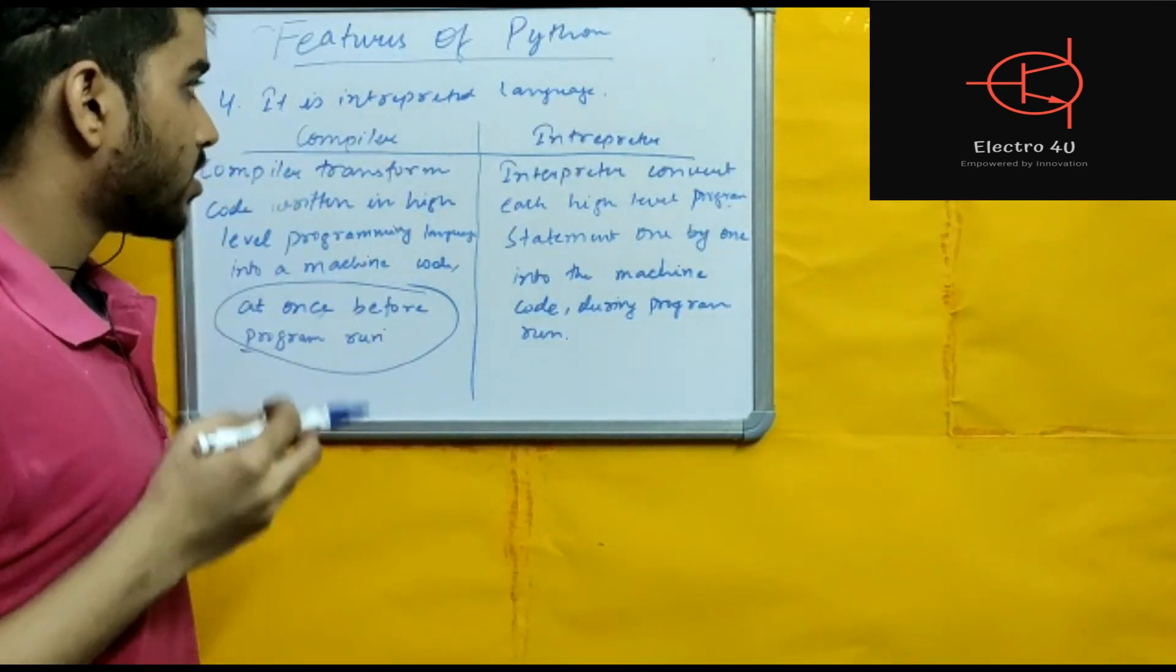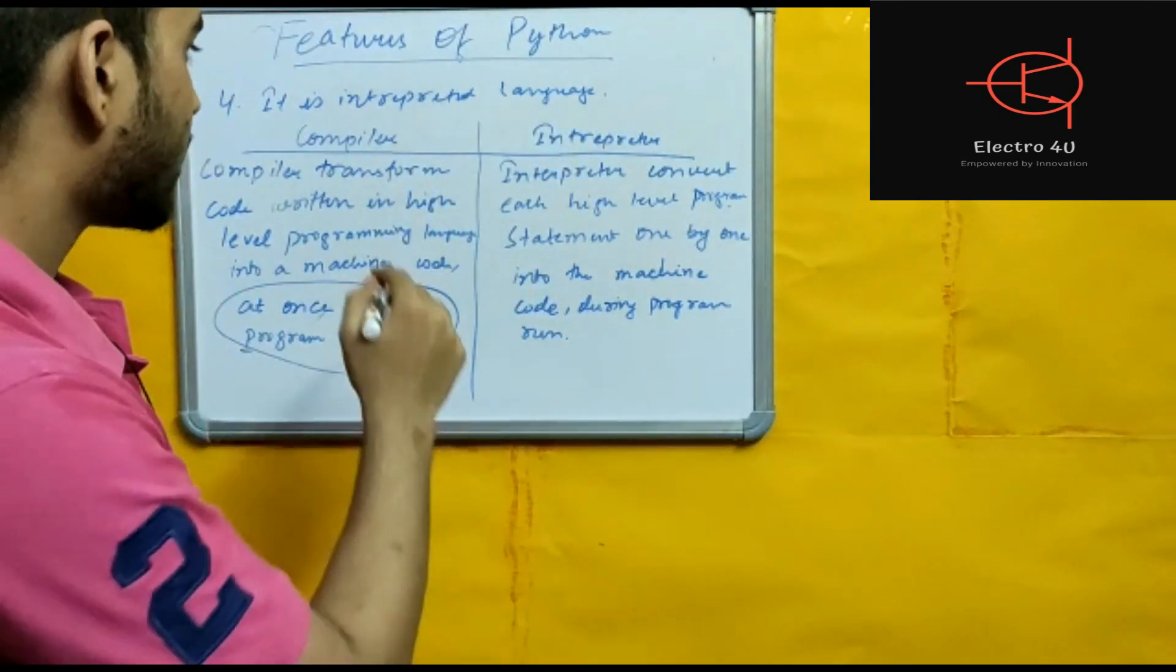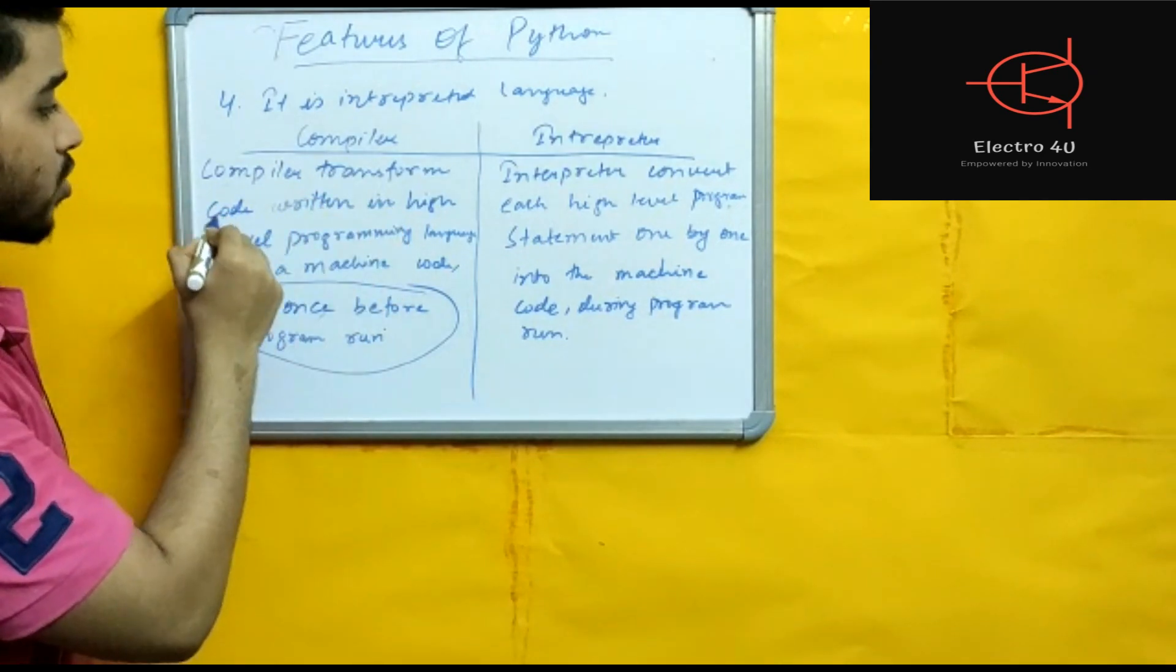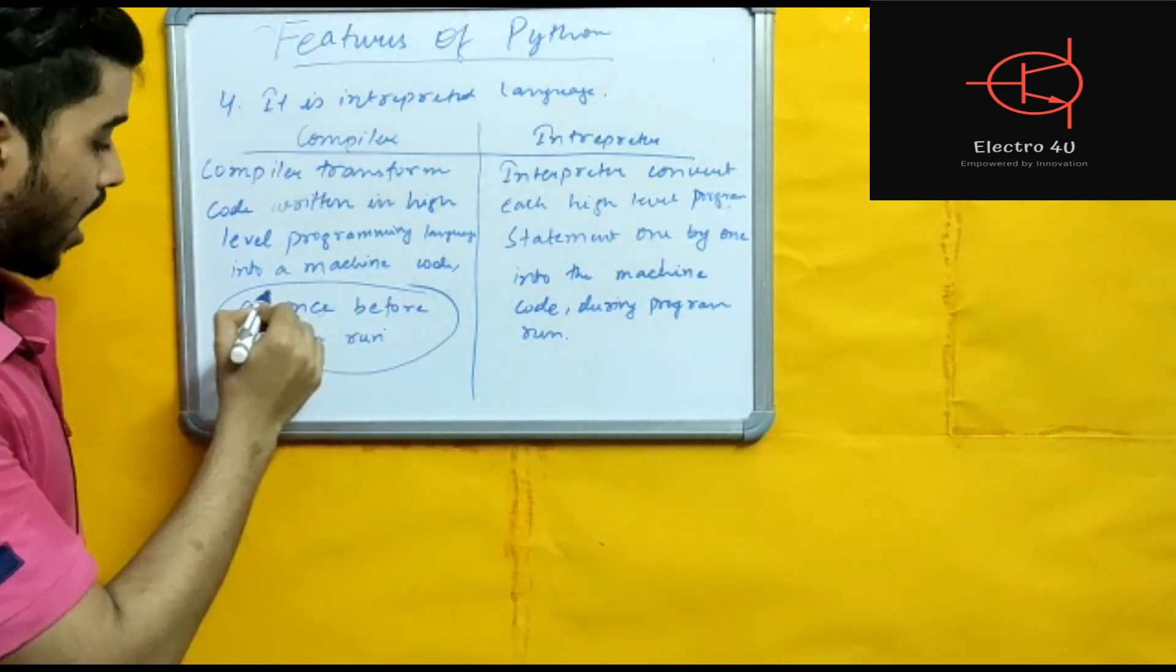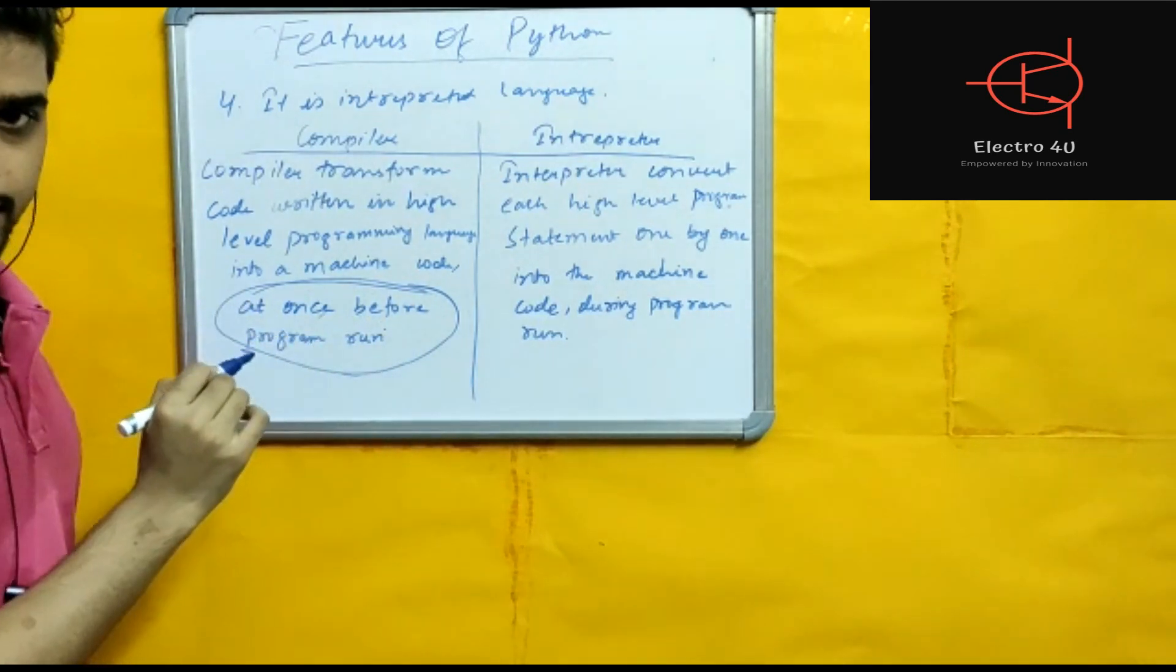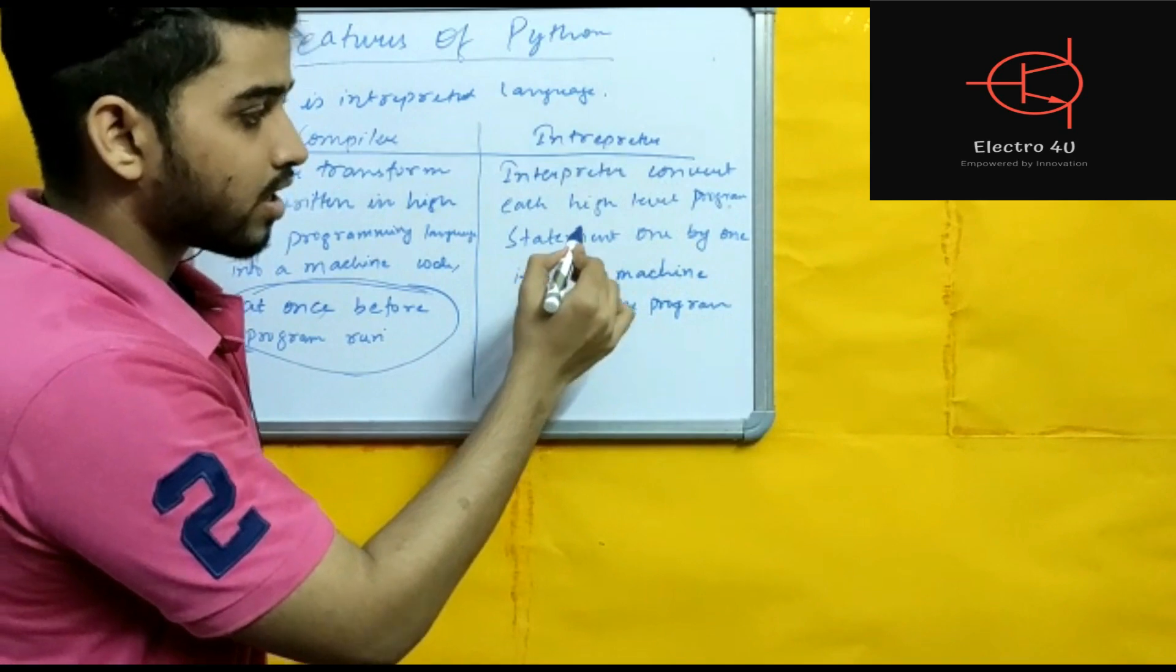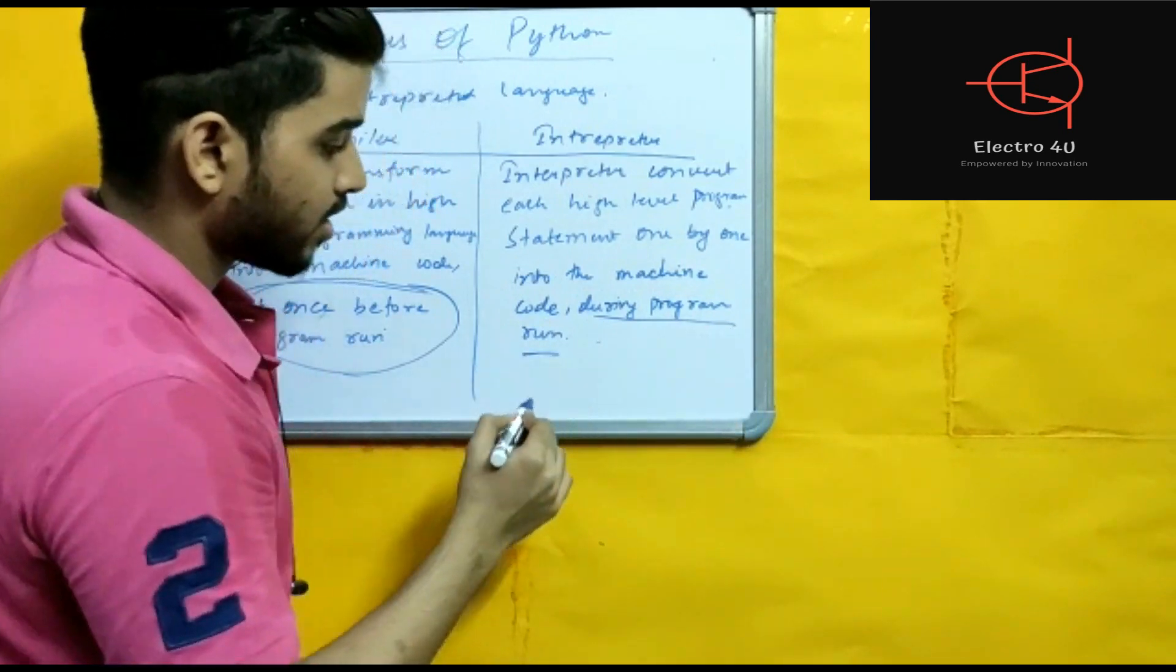Fourth feature: Python is interpreted language. Interpreter and compiler. Compiler transforms code written in high level programming language into a machine code at once before program run. Interpreter converts each high level program statement one by one into the machine code during program run.